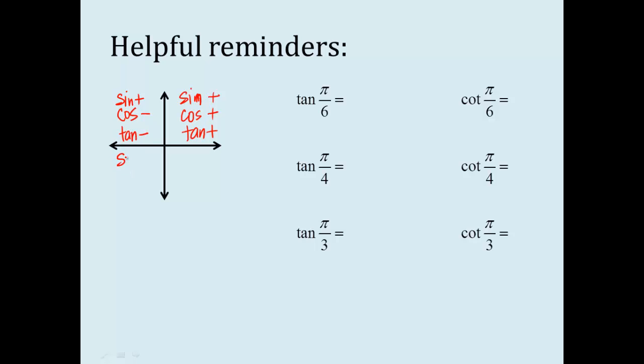Quadrant three, y's are now negative, so sine is negative. Cosine is still negative, but my tangent is positive, because you have the same sign. Quadrant four, y's are still negative, so sine is negative. The cosine is now positive, and the tangent is negative.